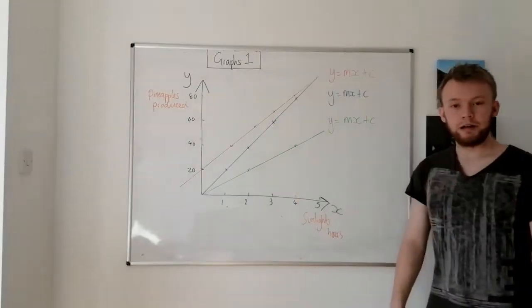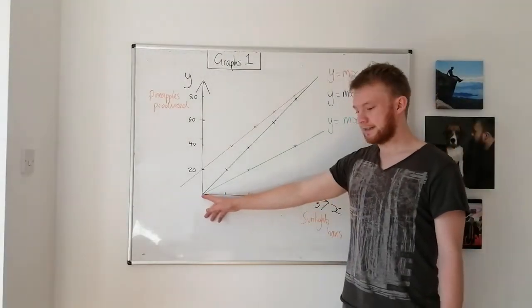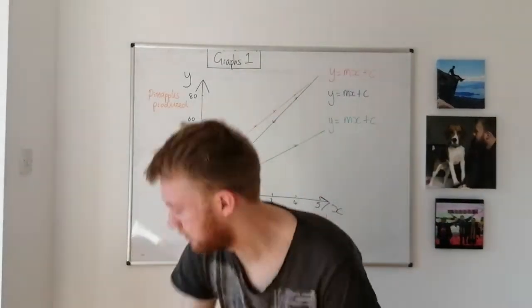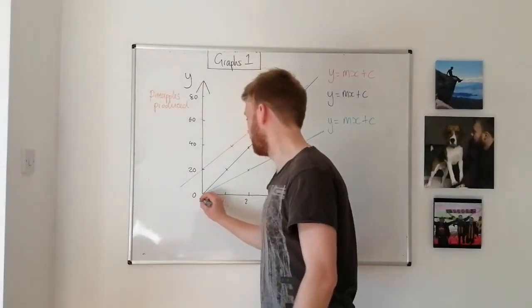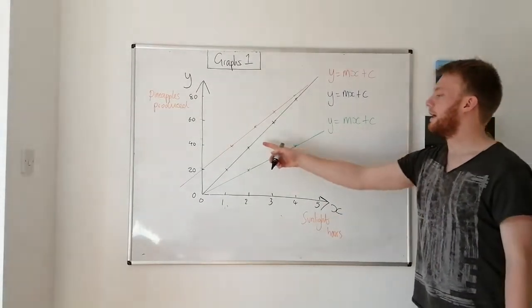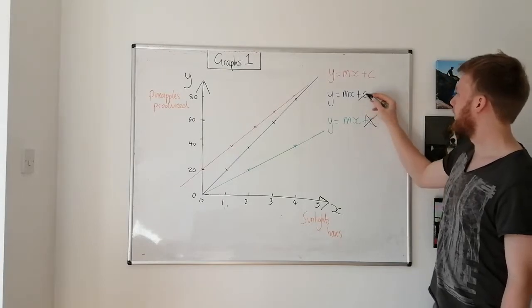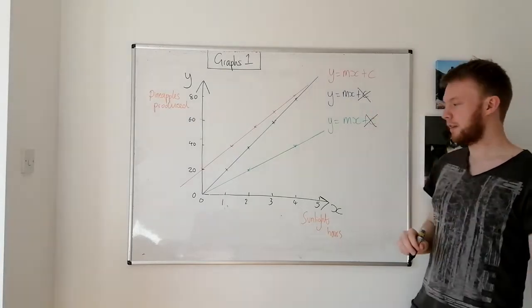Now the blue line and the green line both intercept the y-axis at zero, which I haven't put on. Zero. Happy days. So this plus C term for the blue line and the green line is both zero. I can get rid of it. It's zero. It doesn't matter. It's not there.